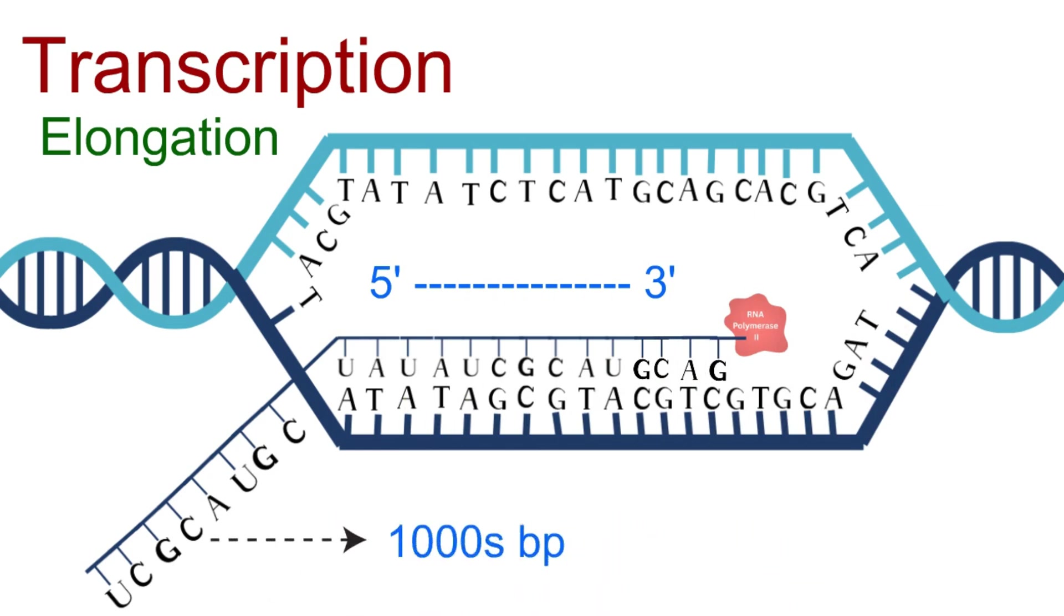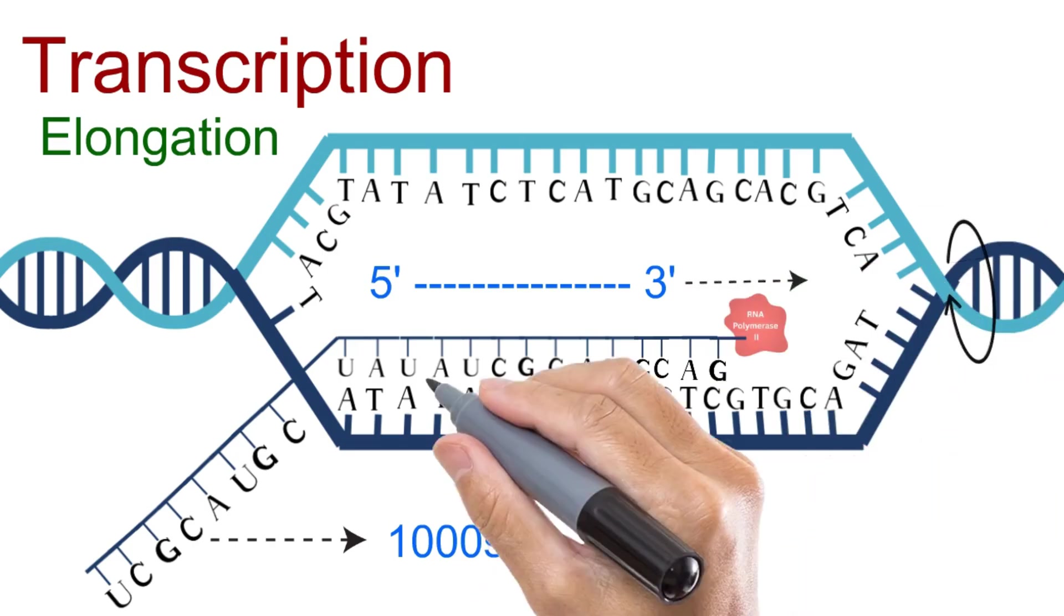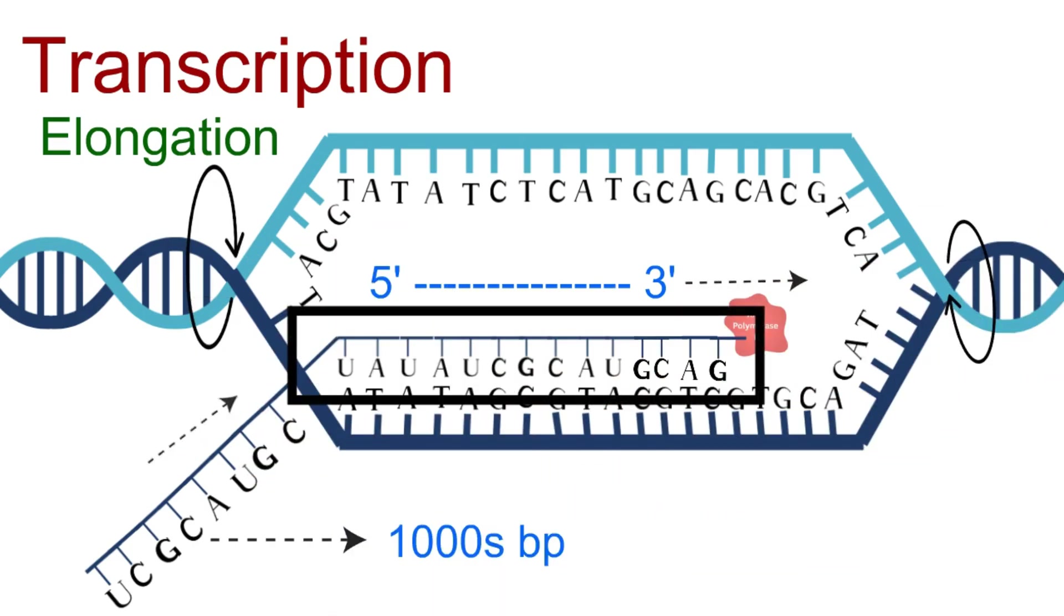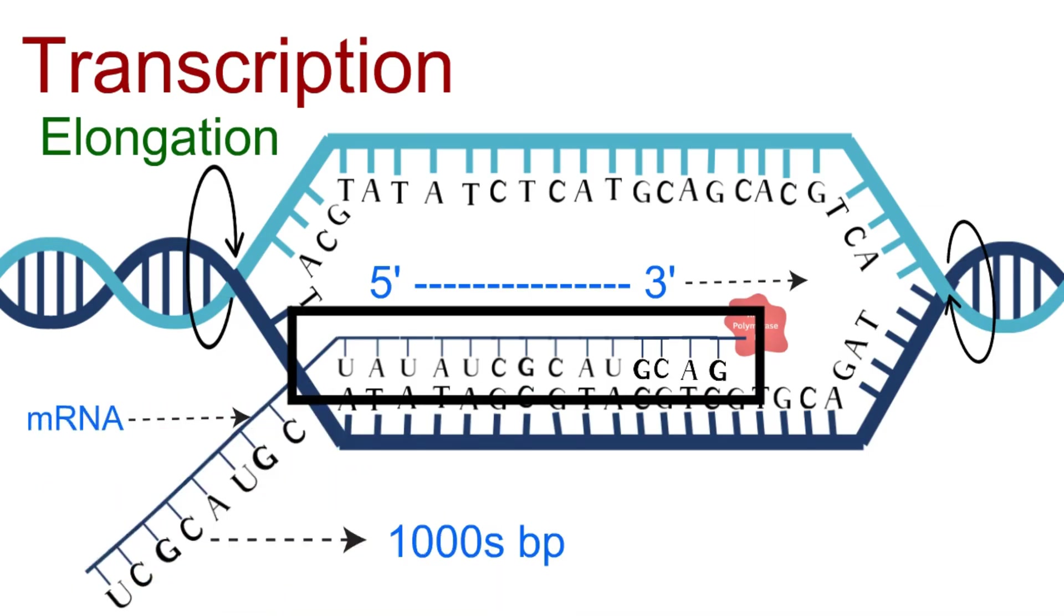Think of it like a typewriter that never stops, moving forward, unzipping, copying, and sealing the DNA behind it while producing a fresh ribbon of RNA. And with elongation in full swing, we're now heading toward the final stage of transcription: termination.